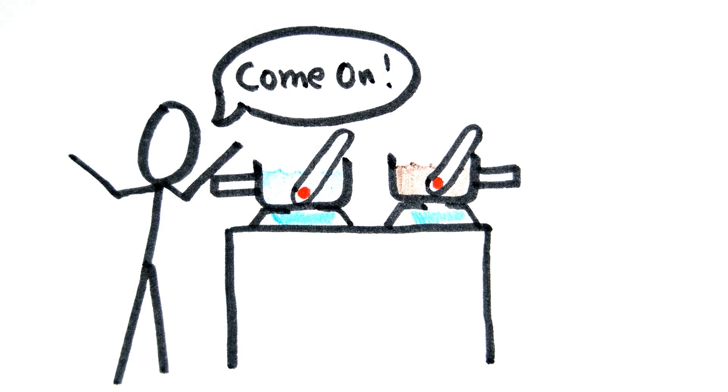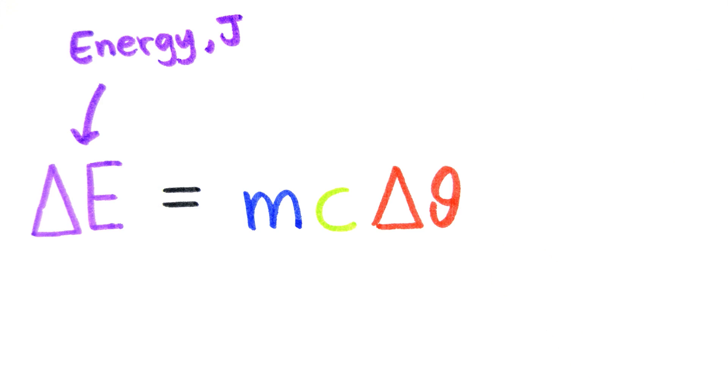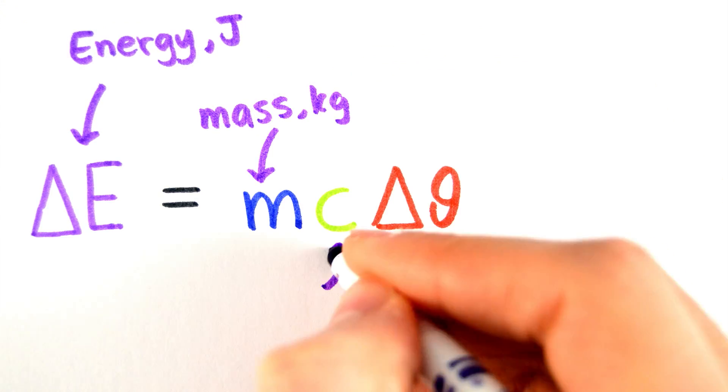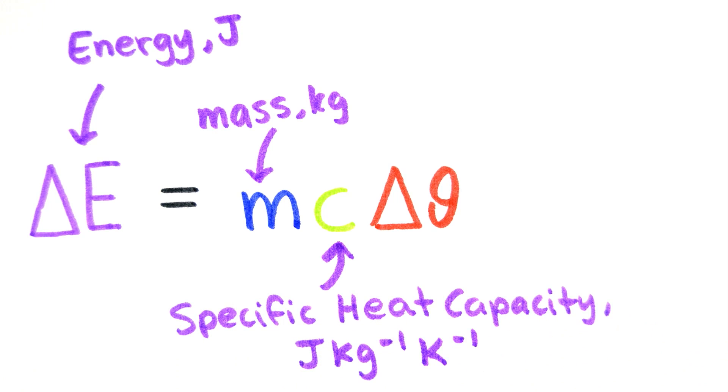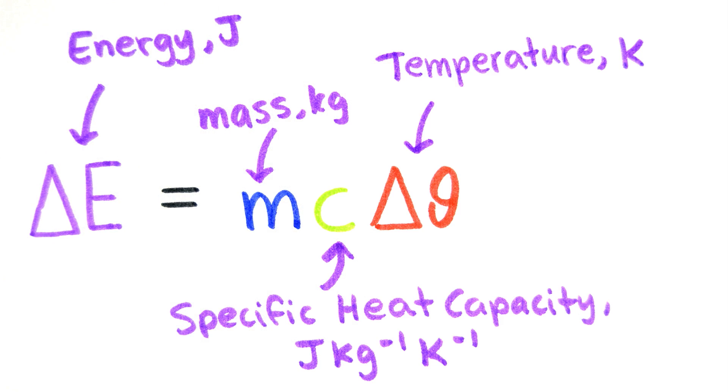The formula which relates the change in internal energy of a body and the change in temperature of the body is ΔE = mcΔθ, where ΔE is the change in internal energy, m is the mass of the substance being heated, c is the specific heat capacity, and Δθ is the change in temperature of the substance, which can be in Kelvin or Celsius since the change would be the same.